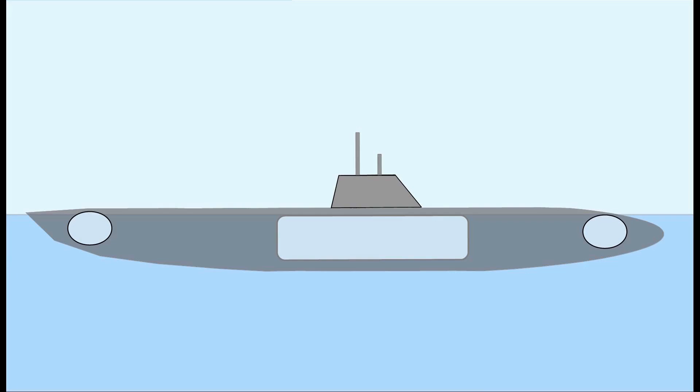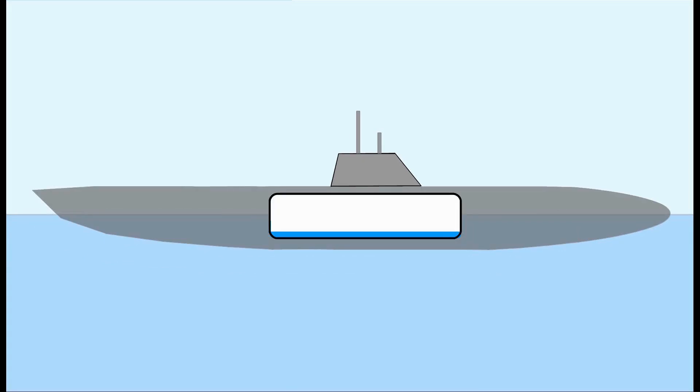Let's take a look at the main ballast tank first. If the tank is filled with air, the submarine is lighter than the surrounding water and it will float on the surface. If the tank is filled with water, the submarine is heavier than the surrounding water and it will sink.